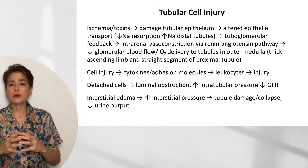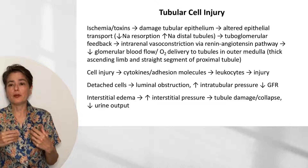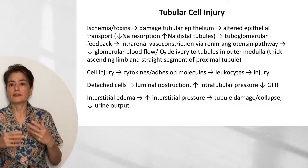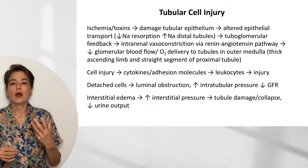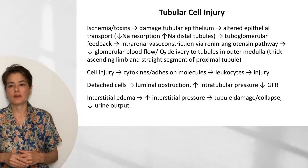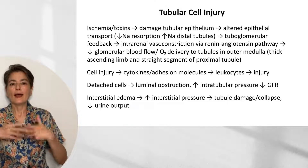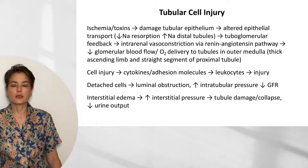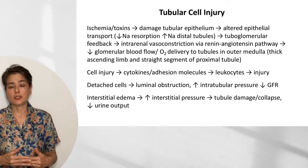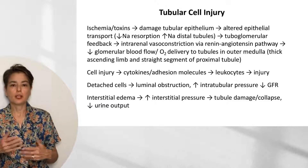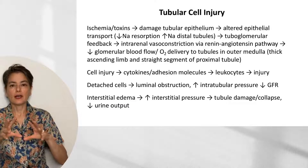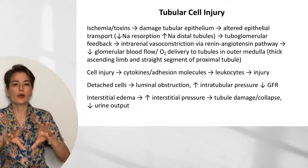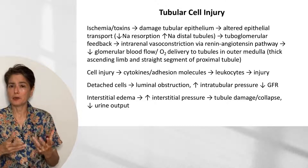This leads to decreased oxygen delivery to the tubules. The outer medulla already has a lower partial pressure of oxygen than the cortex, so the tubules most affected are the thick ascending limb and the straight segment of the proximal tubule. Additionally, as cells are injured, cytokines are released, adhesion molecules are upregulated, leukocytes are recruited, and they produce reactive oxygen species — causing further injury.